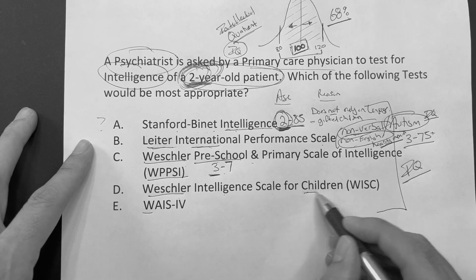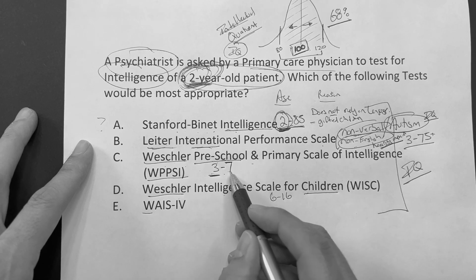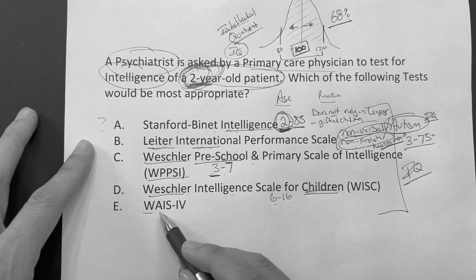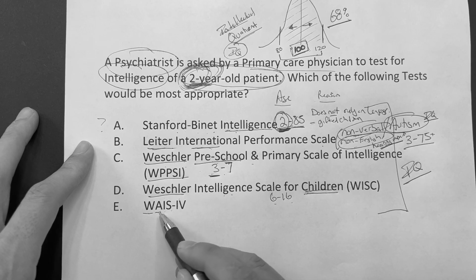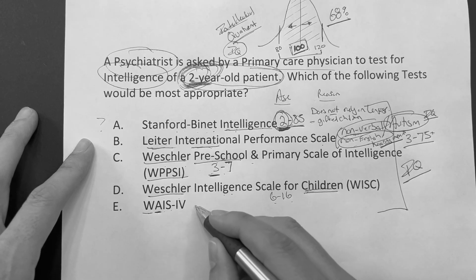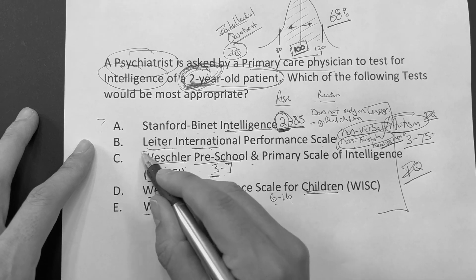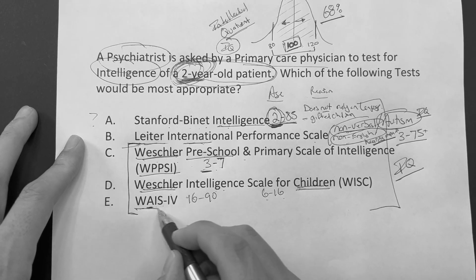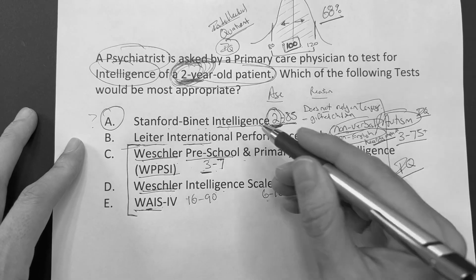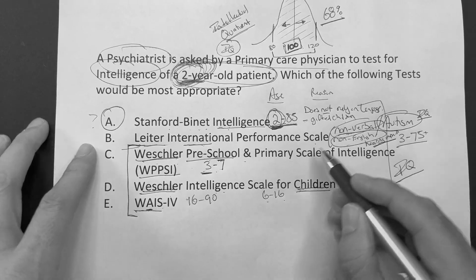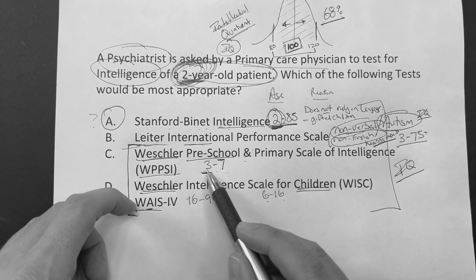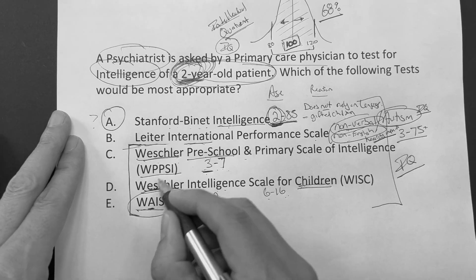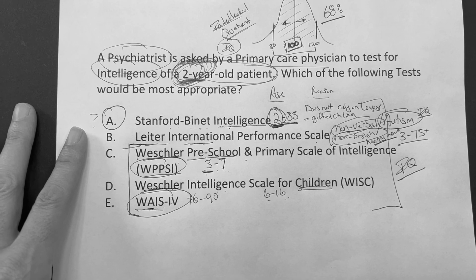The name Wechsler is very synonymous with IQ testing. The Wechsler Intelligence Scale for Children is ages six to 16. So Wechsler Preschool is three to about six or seven, and the Wechsler Intelligence Scale for Children is six to 16. The WAIS — the Wechsler Adult Intelligence Scale — covers ages 16 to 90. So Wechsler pretty much has this cornered. But for someone who's two years of age, you've got to go with the Stanford Binet, two to 85, which doesn't rely on language. Be careful — on your exams they may just give you the acronyms.